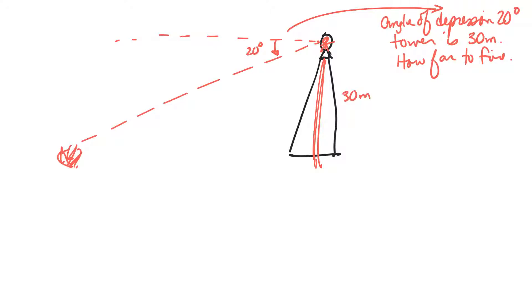And they say that that angle of depression is 20 degrees. So the question is, if I look out and I look down at 20 degrees, and I see the fire, the question will be how far is the fire away from the tower.